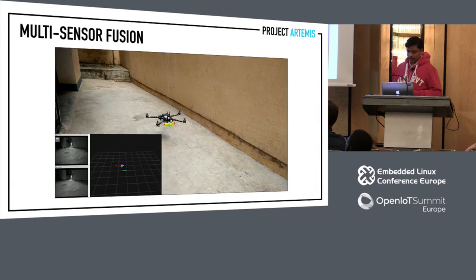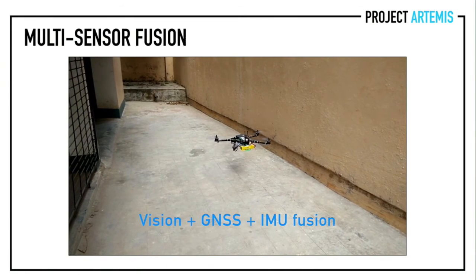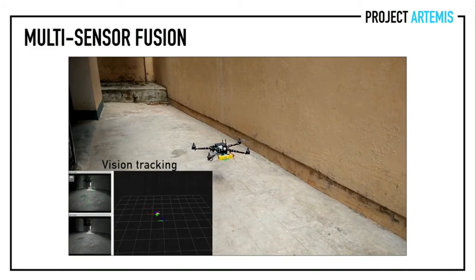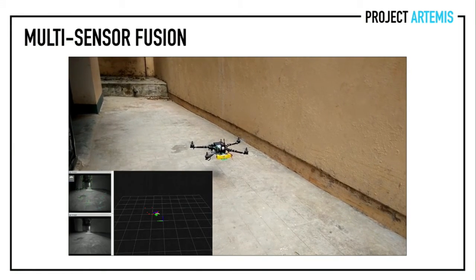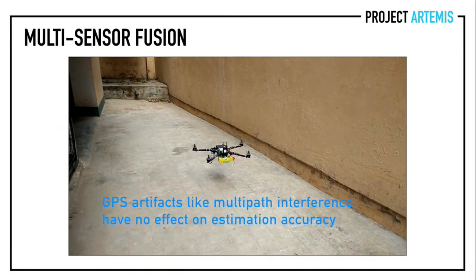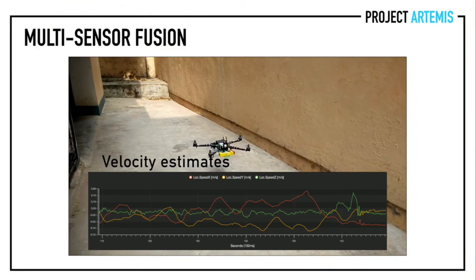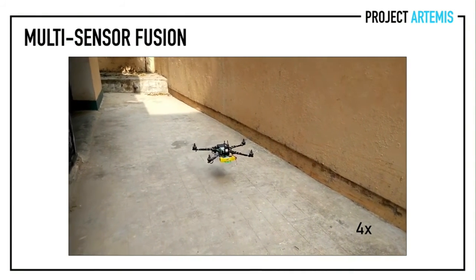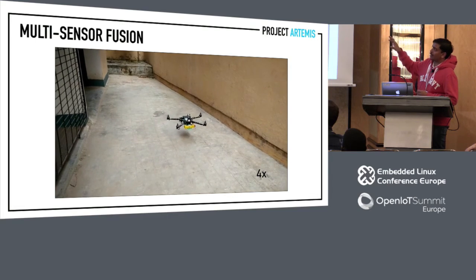A short video shows how well it hovers in an urban canyon situation, where multi-path GPS interference makes it very hard to fly otherwise. It's flying autonomously — stably hovering using both vision and GNSS GPS for position tracking. The multi-sensor fusion allows flying in a situation that would have been impossible otherwise. Over a long term, GPS corrections prevent vision drift, keeping the vehicle in the same position.